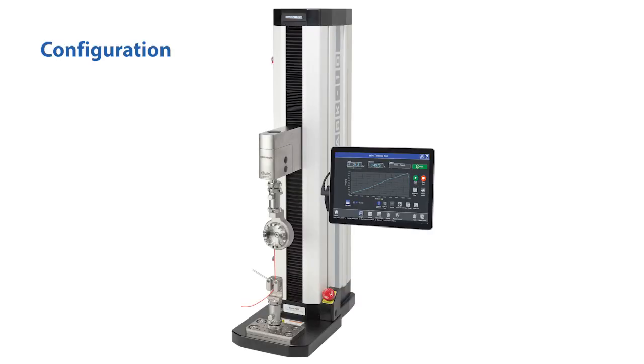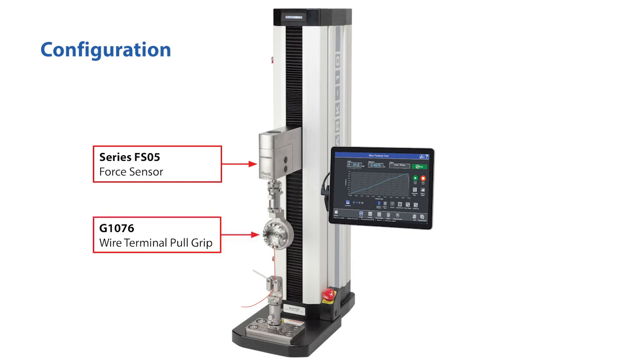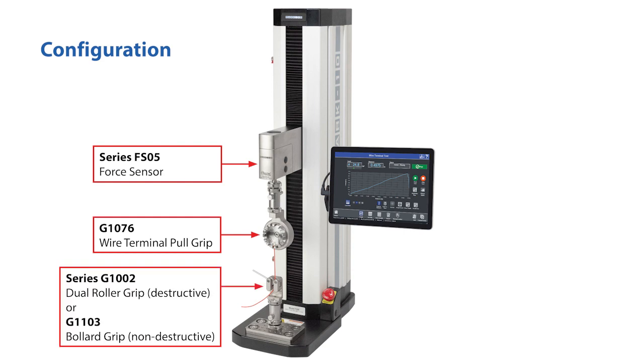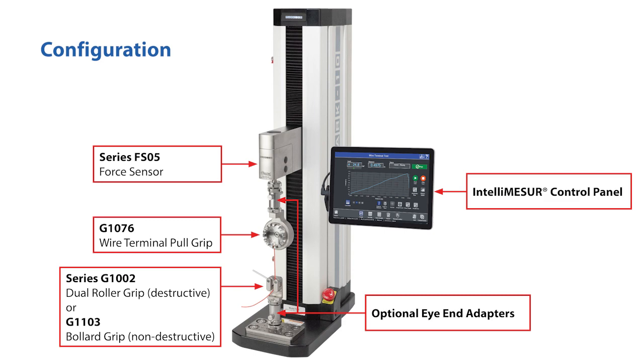A typical setup includes a series FS05 force sensor, a G1076 wire terminal pull grip, a series G1002 dual roller grip for destructive testing, or a G1103 bollard grip for non-destructive testing, eye end adapters to quickly switch out grips, and an IntelliMeasure control panel.